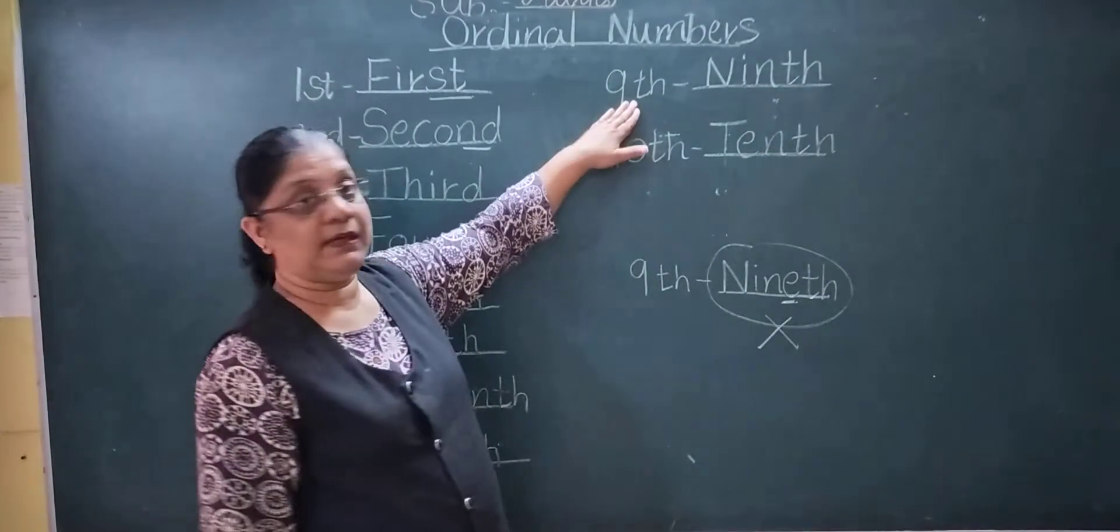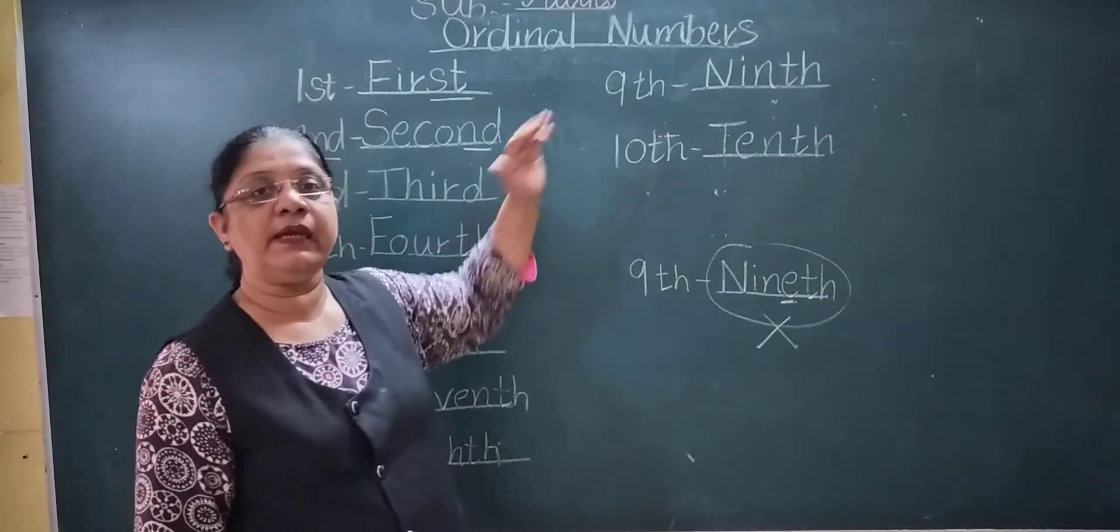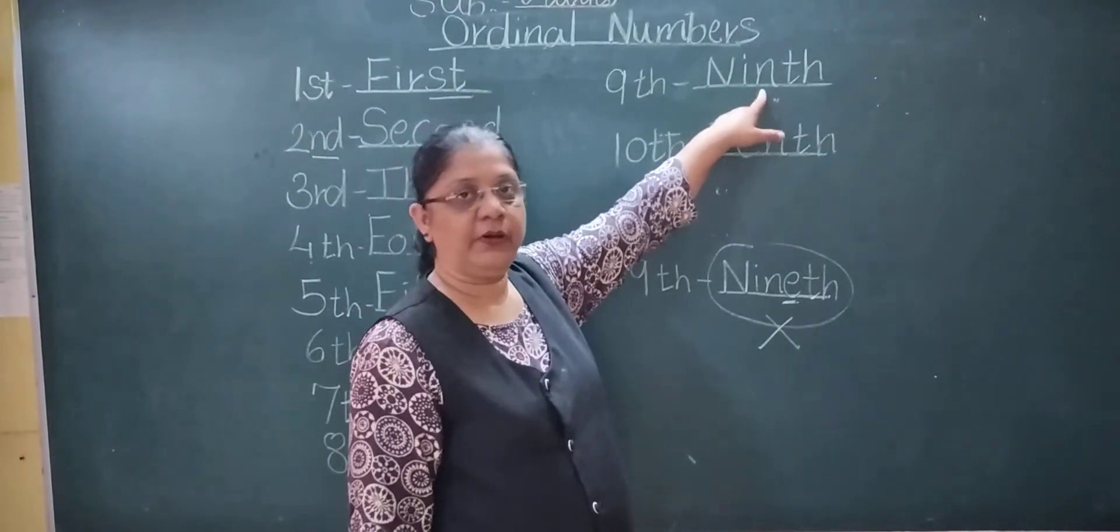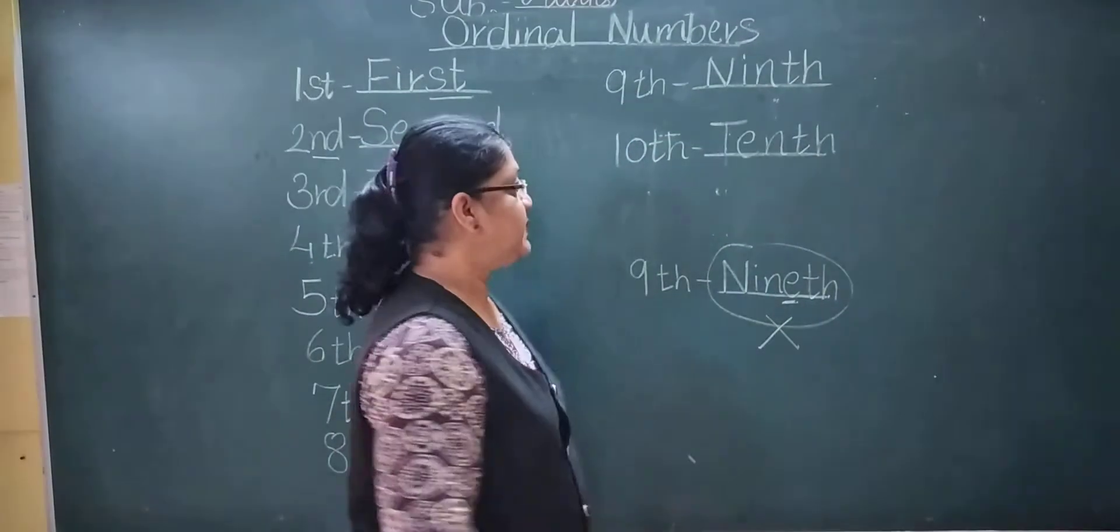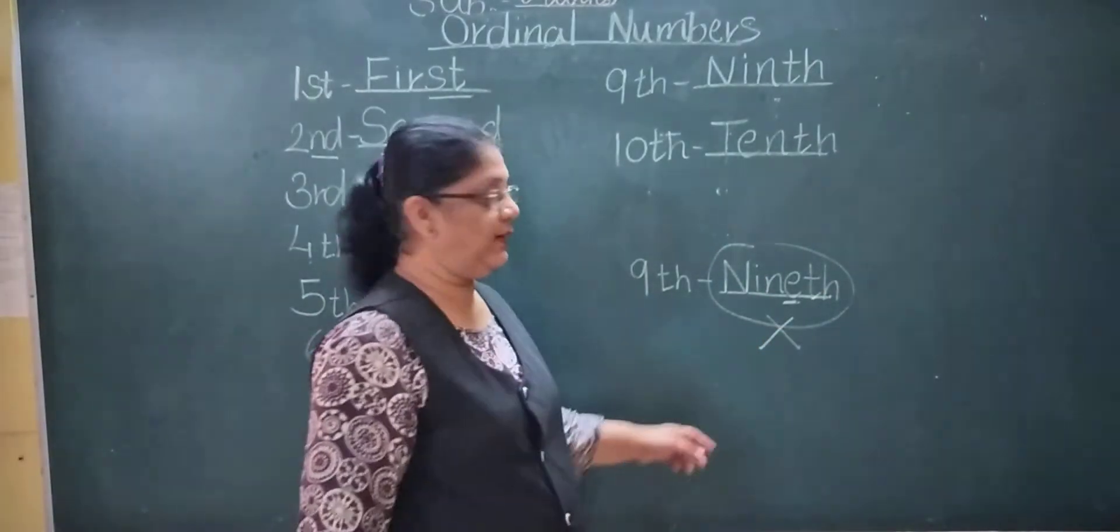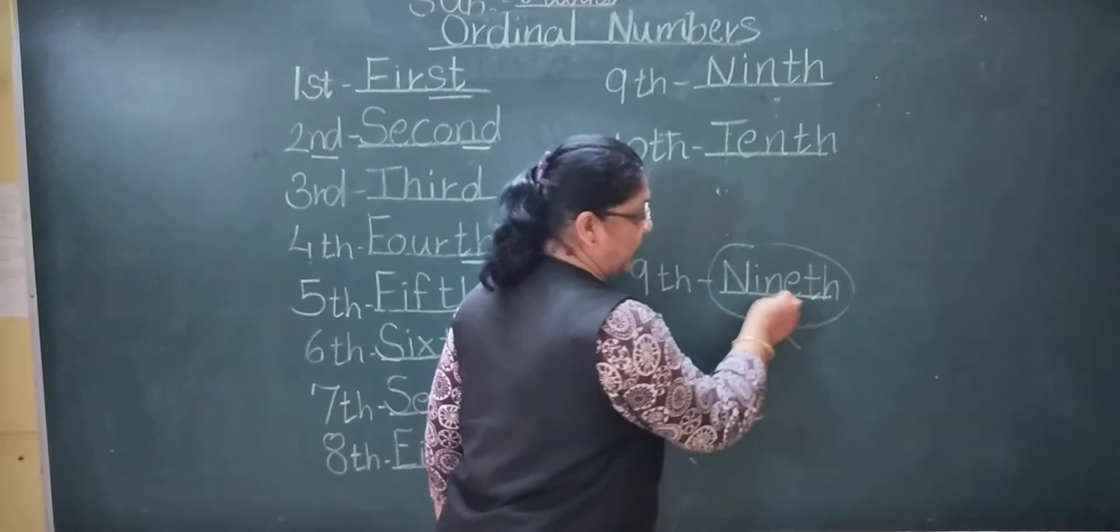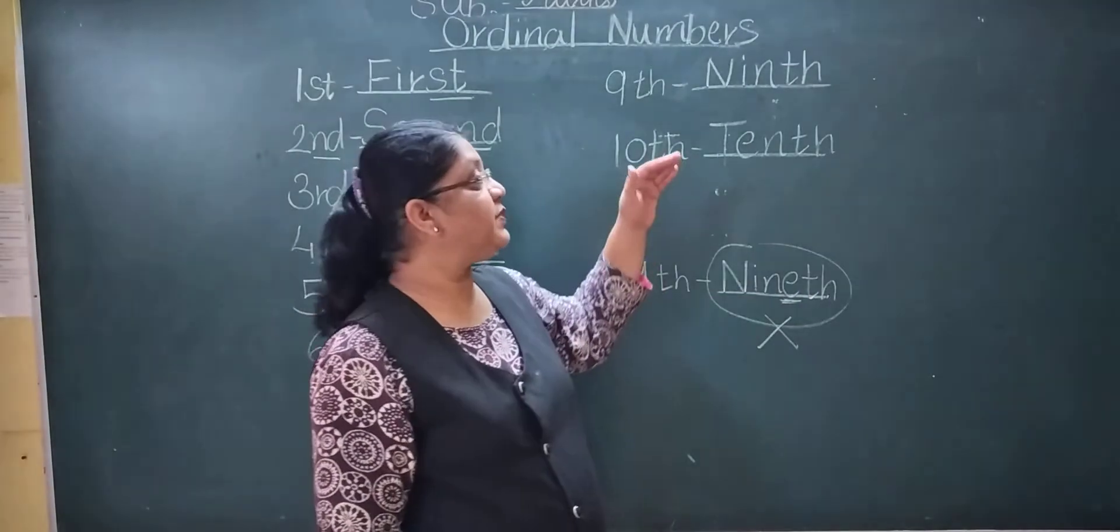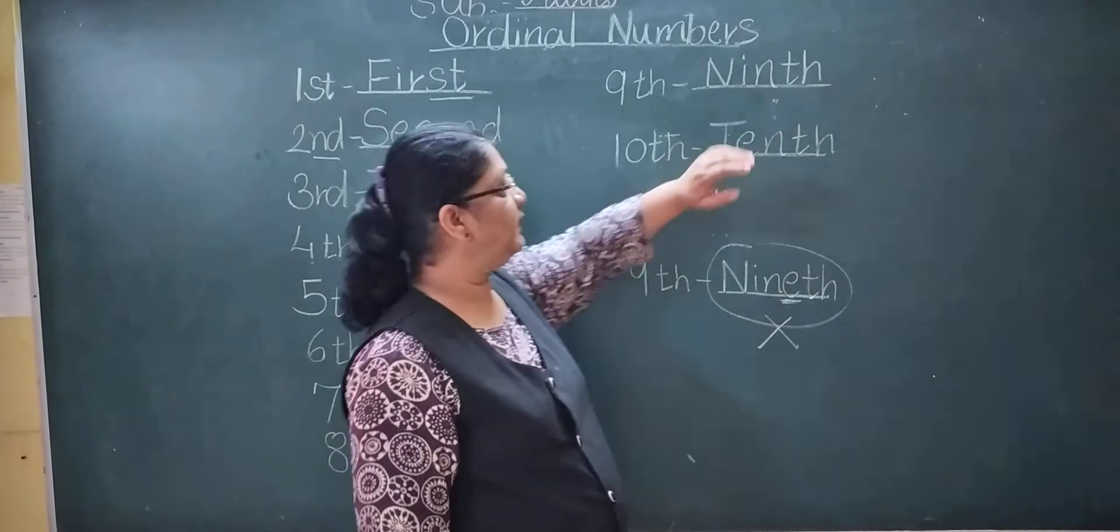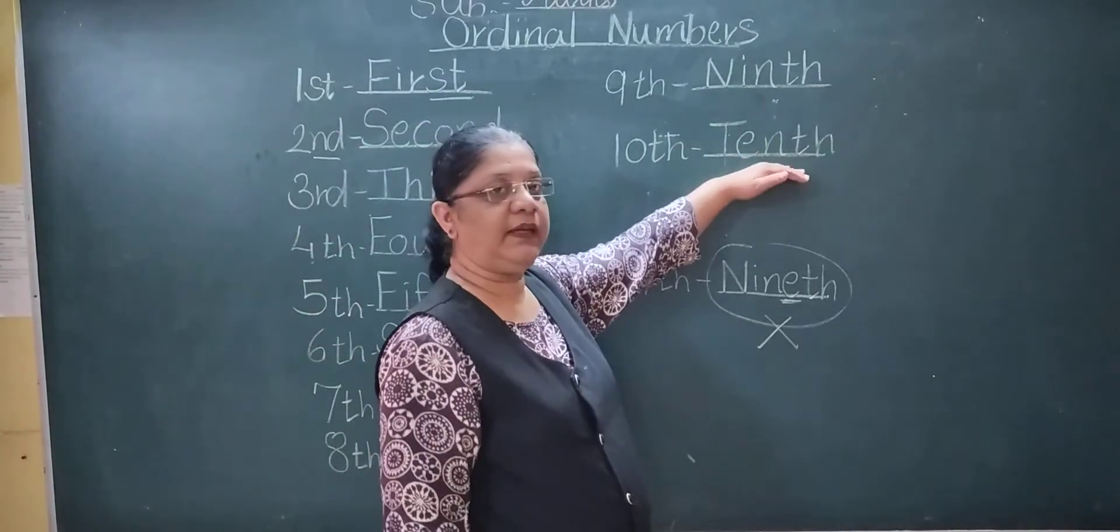Now, ninth. See, our students here, ninth spelling is different. E is not there. See, N-I-N-T-H. N-I-N-T-H. See, N-I-N-E-T-H. This is the wrong spelling. See, E is not there. So, you just keep in your mind, N-I-N-T-H. Nine. T-E-N-T-H. Ten.